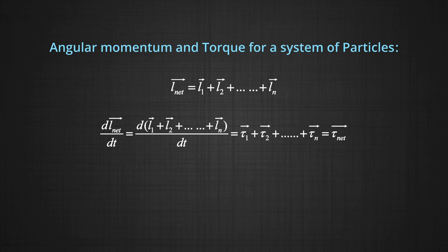With the help of this concept of angular momentum of a particle we can find out angular momentum of a system of particles. The total angular momentum of a system of particles about some axis can be defined as the vector sum of angular momenta of the individual particles. Hence L net vector can be written as L1 vector plus L2 vector and so on till Ln vector, where the vector sum is over all the n particles of the system.